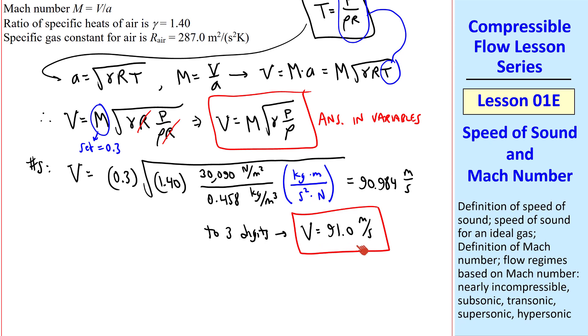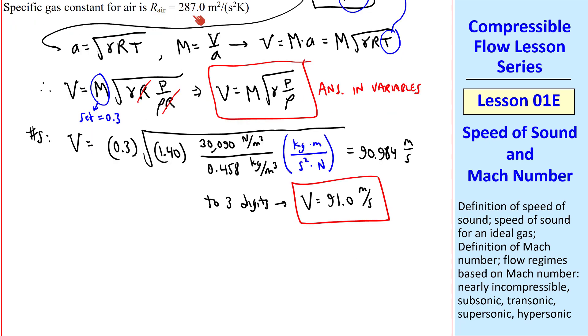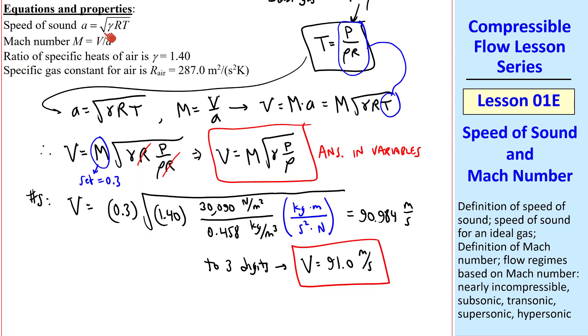If the speed is anywhere above this, the incompressible approximation would start to yield significant errors. I also want to point out one thing here. Although we know r air, r actually dropped out in our final equation. So this answer is independent of r, although it does depend on gamma. And it depends on r indirectly, through the ideal gas law. But if I had given this problem with a different gas other than air, and gave you gamma, but did not give you r, many students would be stuck at this point, not being able to calculate the speed of sound. But if you stay in variables, you realize that r cancels, and you don't really need this piece of information anyway.